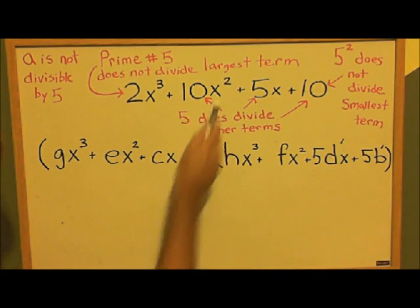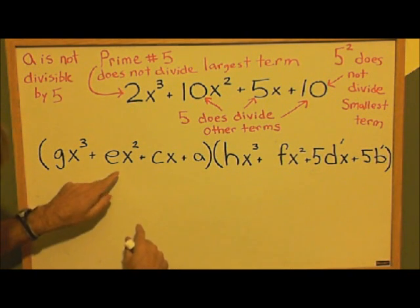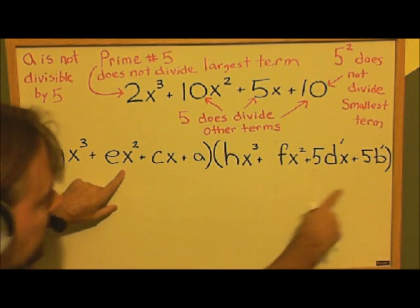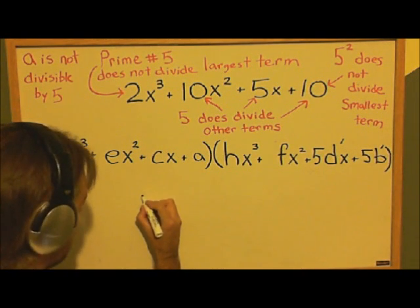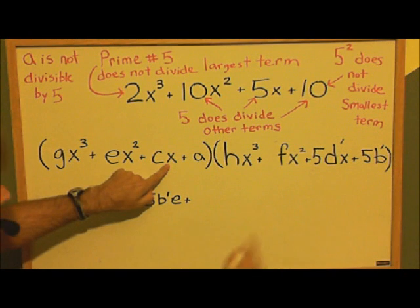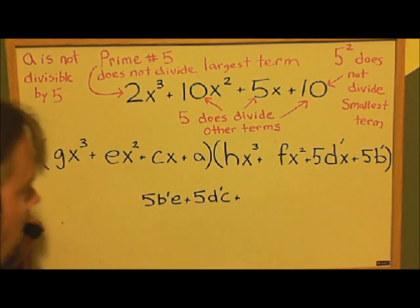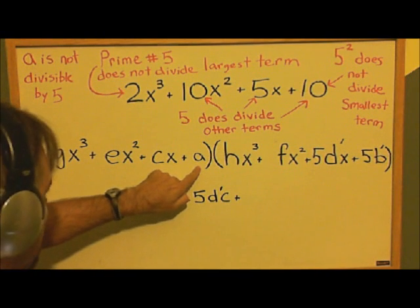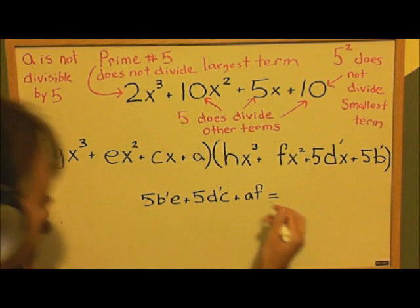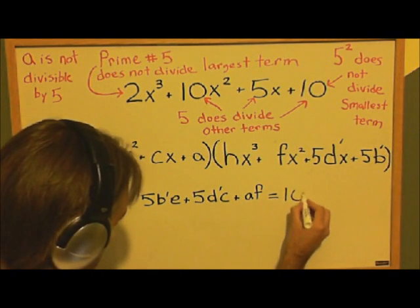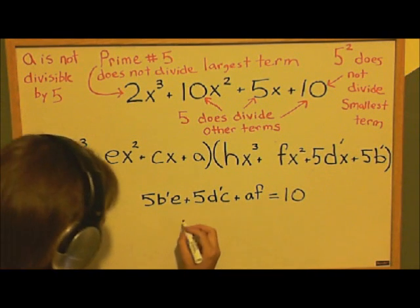Now we want to look at the terms that can give us x squared. You'll see that the pattern is kind of repeating here. We have ex squared times 5b prime, we have cx and 5d prime x, and we have a and f. This is going to equal 10. So again, we put all the fives over on the right side.